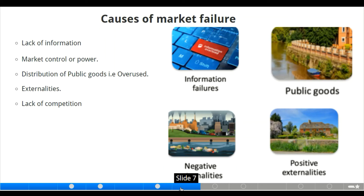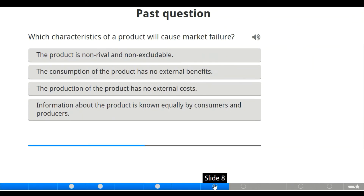The fourth cause is externalities. Externalities occur when the cost or benefit of a transaction falls on someone other than the producer or the consumer. There are two types: negative externalities, which occur when costs spill over to third parties, and positive externalities, which occur when benefits spill over. Excessive competition can also lead to market failure.